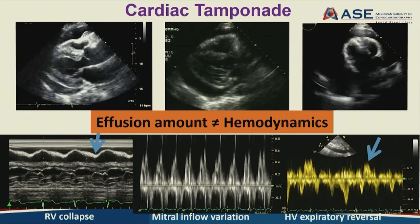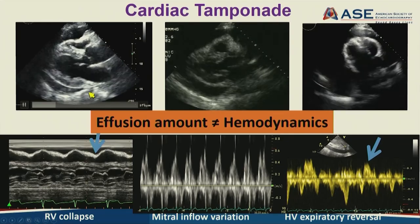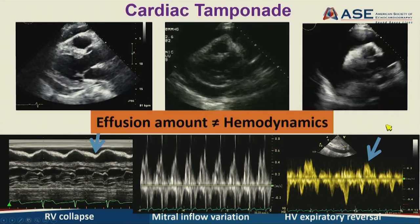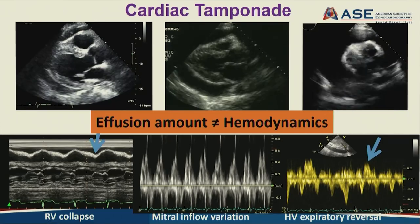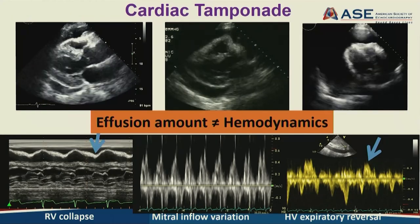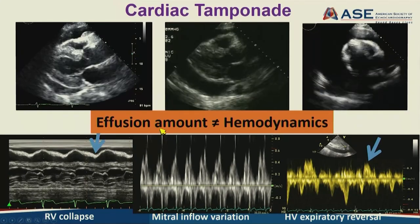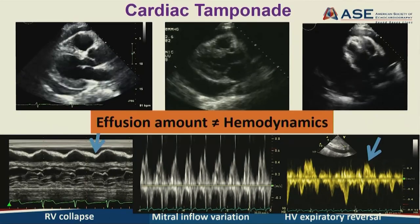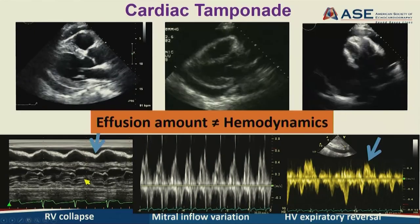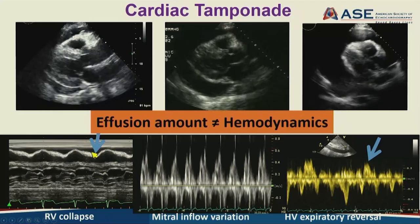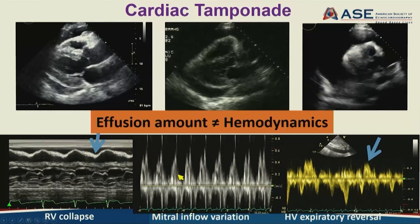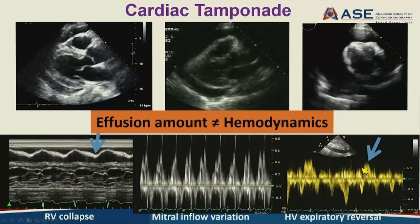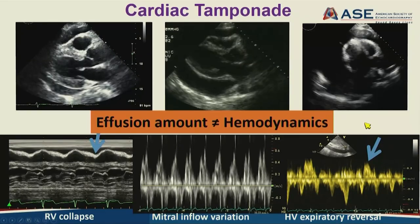Regarding cardiac tamponade: a small effusion in one patient who was hypertensive and tachycardic versus a massive effusion in another patient who was neither hypotensive nor tachycardic—whose only complaint was right upper quadrant pain. Effusion amount does not always correlate with hemodynamics; acuity matters greatly. Signs include subtle RV collapse on M-mode, mitral inflow respiratory variation, and hepatic vein expiratory flow reversal as a sensitive marker for cardiac tamponade.